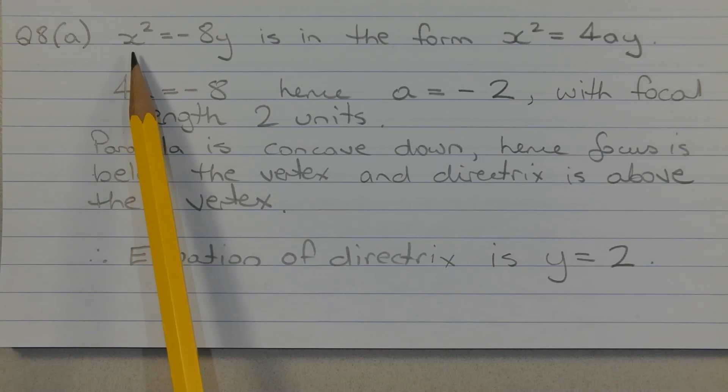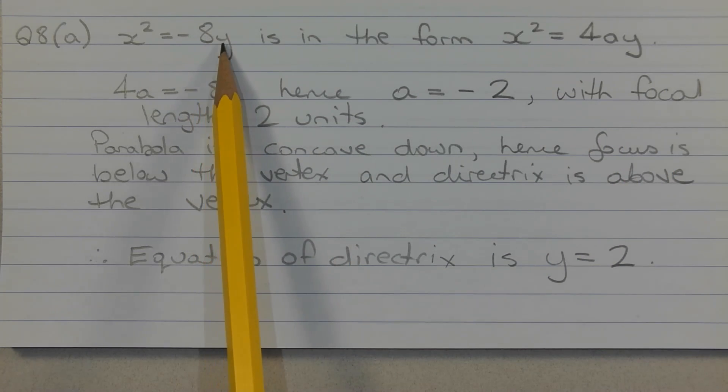The equation of the parabola x squared equals negative 8y is in the form x squared equals 4ay. So equating the coefficients of the variable y,